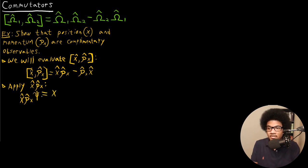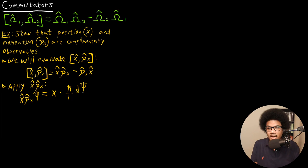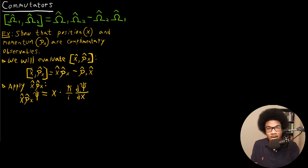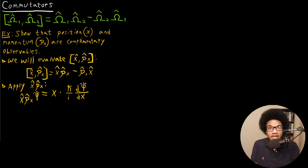So if we do that, we're going to have x — since the position operator is just multiplying by x — so we'll have x times H-bar over i times d-psi/dx. That's the result we get when we apply the momentum operator first and then multiply by the position operator. This is what we get when we apply the operators in this order.